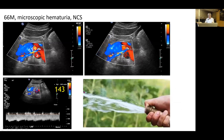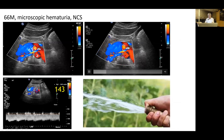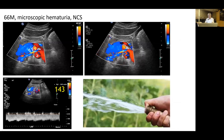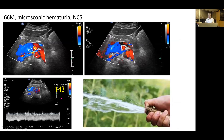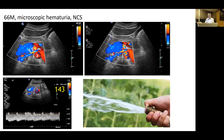A 66-year-old man with microscopic hematuria due to Nutcracker syndrome: color Doppler ultrasound well shows bright colored jetting from the compressed aorto-mesenteric left renal vein, and the peak flow velocity is 143 cm/s. We can make a diagnosis of Nutcracker syndrome without invasive catheterization.